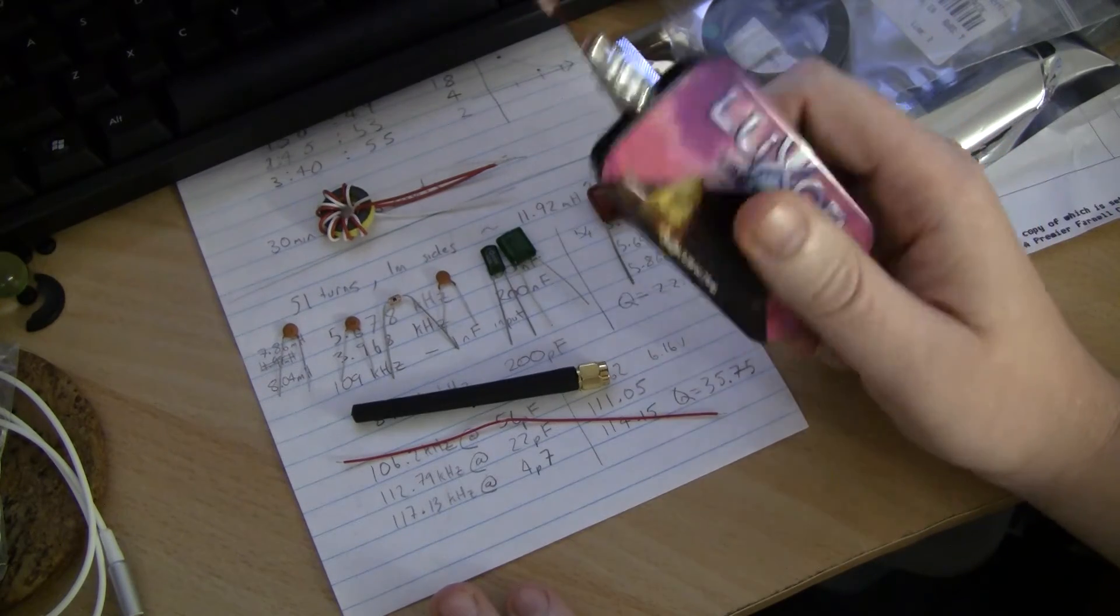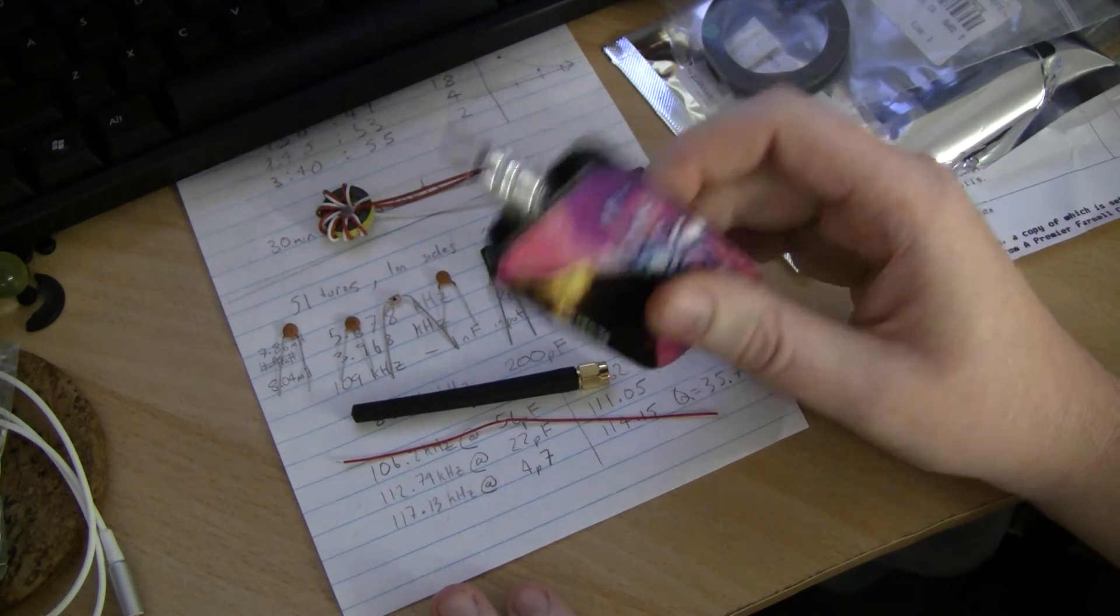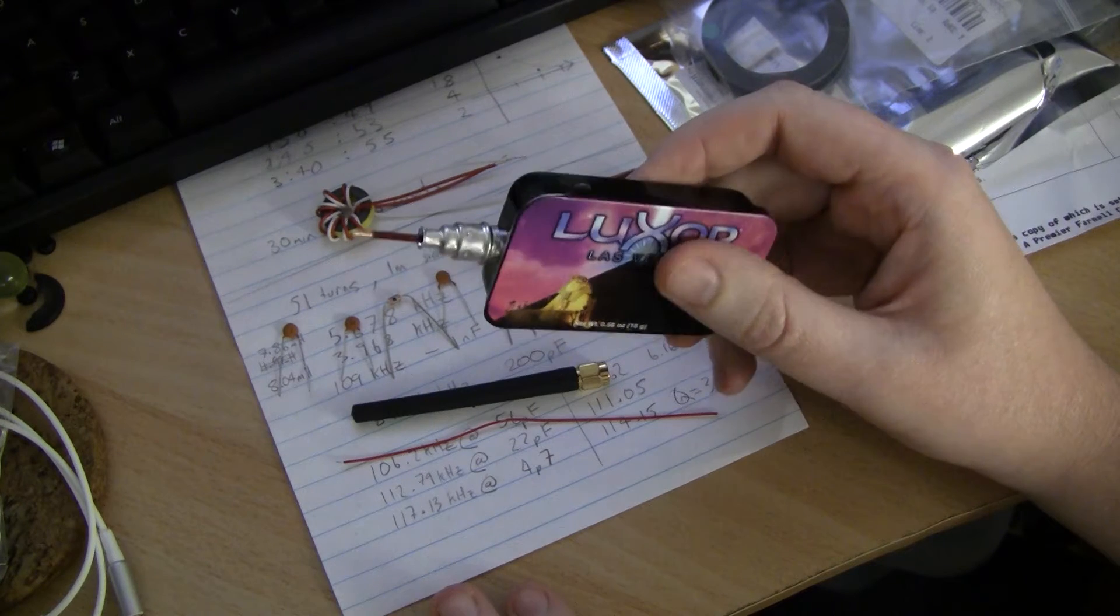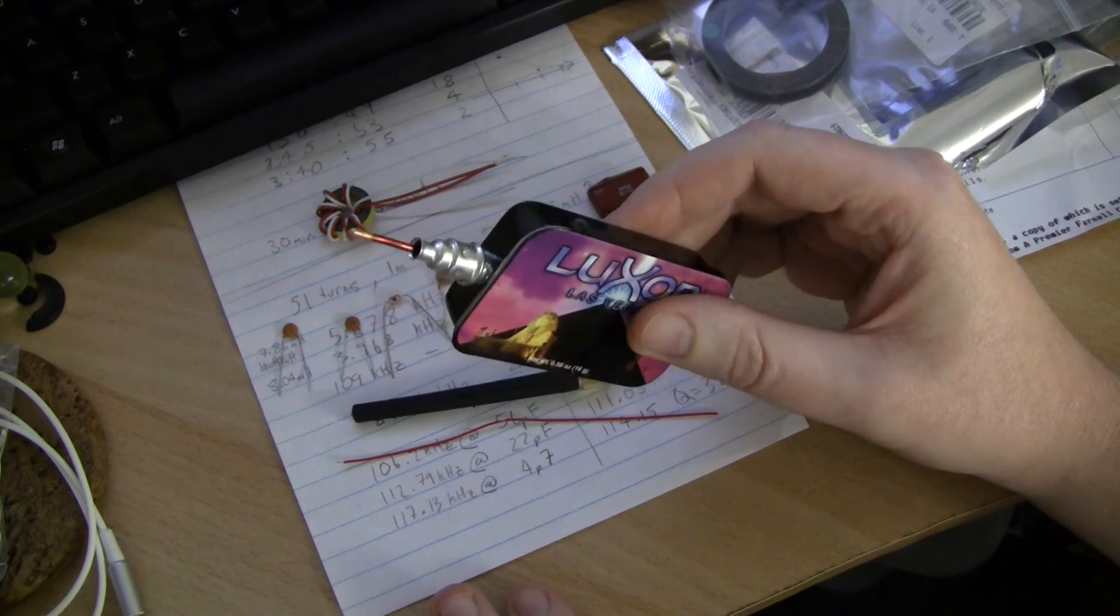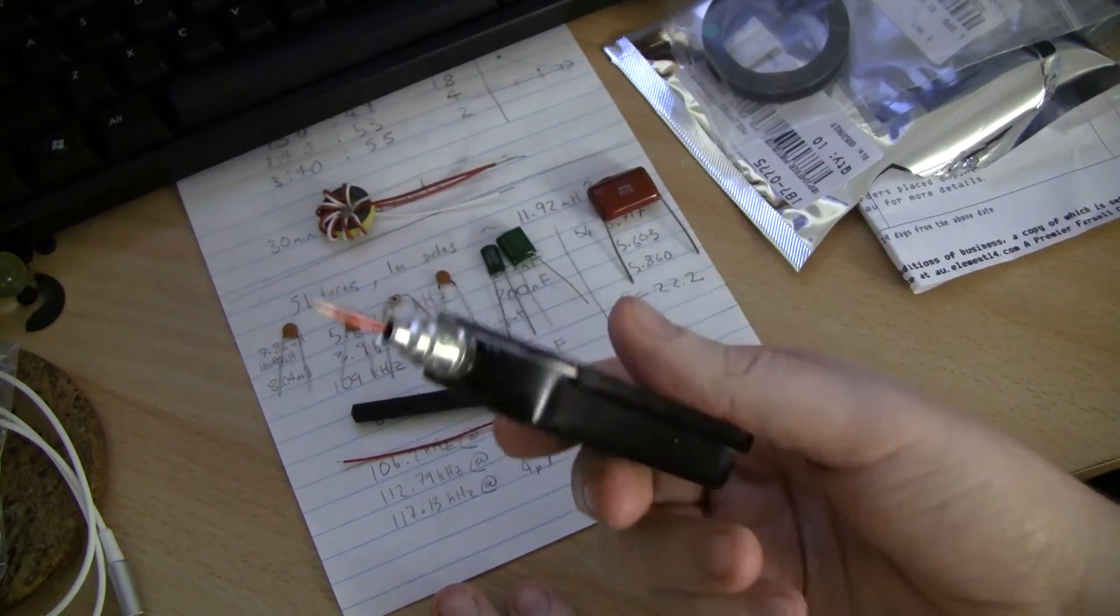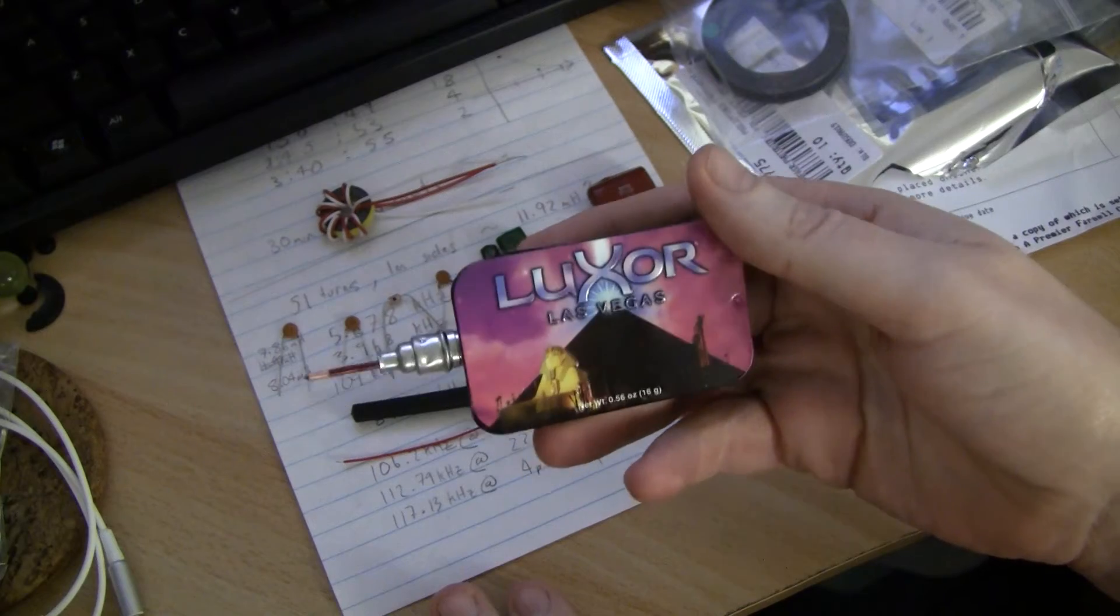This is actually Daniel Garcia's version of Charles Wenzel's circuit. It's not terribly different, much the same, but the resistor values are a little bit more tractable for component sources that you might have. I built it in a fairly small enclosure. It's a Luxor mint tin that I got from Vegas many years ago.